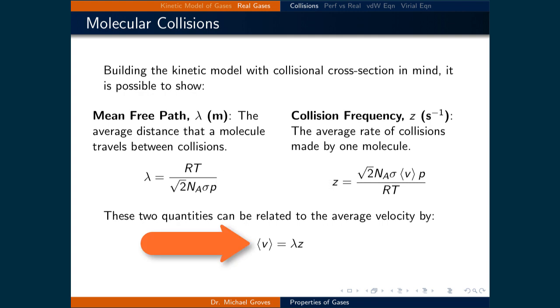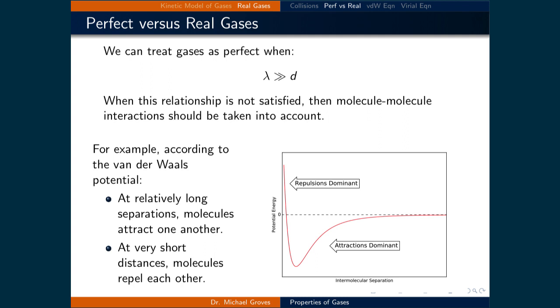If these two quantities are multiplied together, then we get the average velocity. Now that we have these basic quantities relating to collisions, we can quantify when the ideal gas law no longer applies.